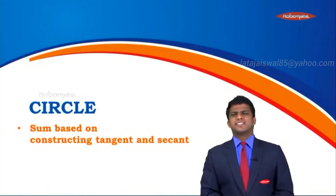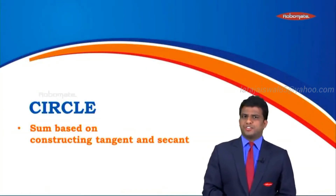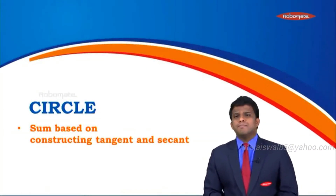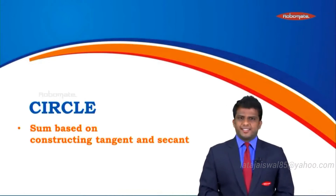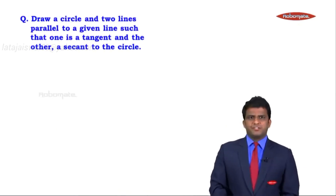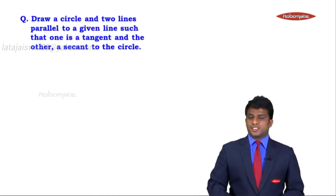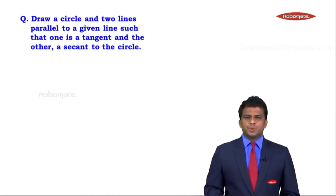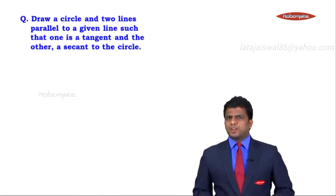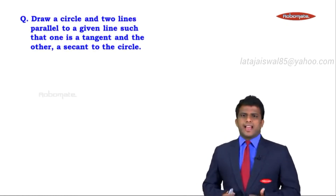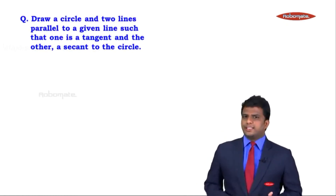We will do a very simple construction in this chapter based on constructing a tangent and a secant for a circle. We have a question which wants us to draw a circle and two lines parallel to a given line, such that one line is a tangent and the other is a secant to the circle.